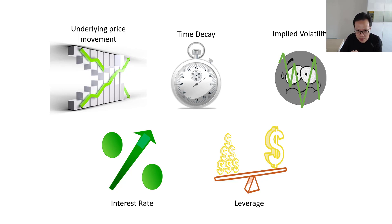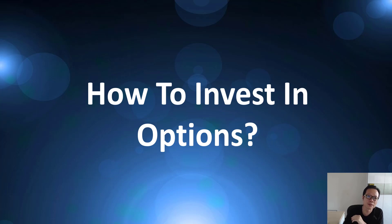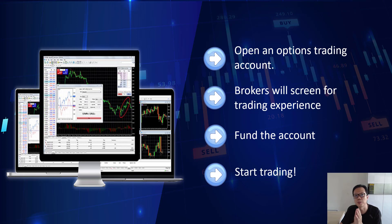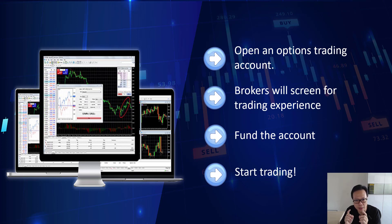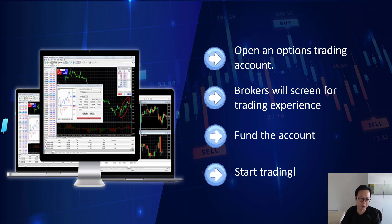How do you invest in options? It's very simple — just open an options trading account. Some brokers offer an integrated account where you can trade many different types of products all in one place; an example is Interactive Brokers. Because options are leveraged and more complex products, brokers are required to screen your experience before allowing you to trade them. Usually this is just a questionnaire and self-declaration about your knowledge and experience. Once your account is approved, fund it and you can start trading.